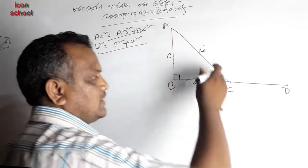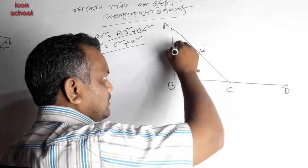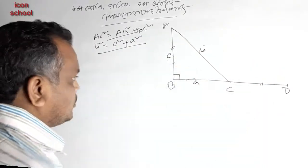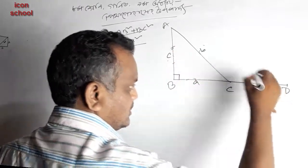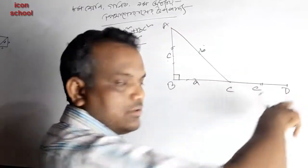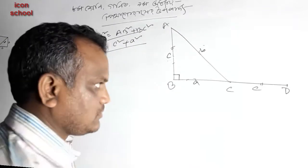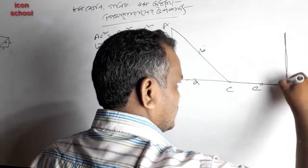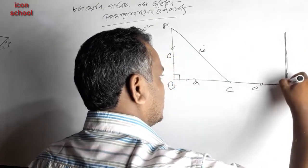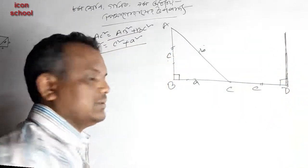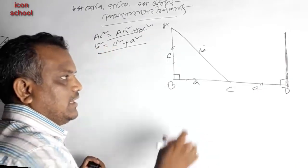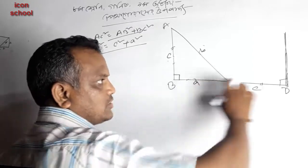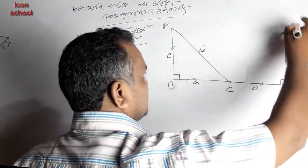So A, B, C, D — which means A is A, and B is C, D. D is the Lombo. This Lombo is the BC.